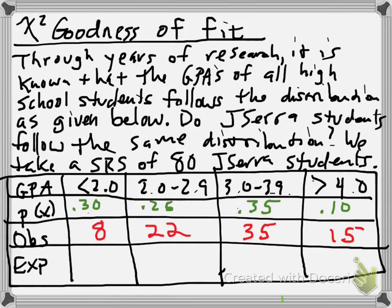We take a simple random sample of 80 J. Sarah students and record the following observations. Looks like 30% of all high school students get less than 2.0 GPA and we found 8 J. Sarah students in that category, while 25% get between 2.0 and 2.9 we found 22. 35% get between 3.0 and 3.9 so we found 35 of those, and 10% get above 4.0 and we found 15 smarty pants.